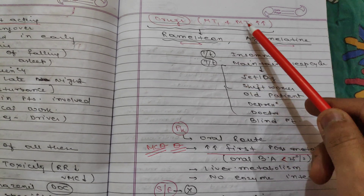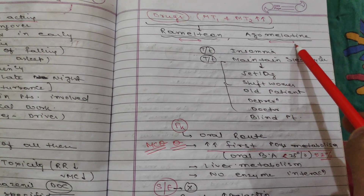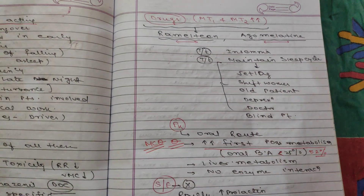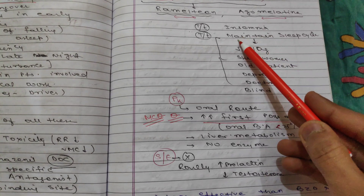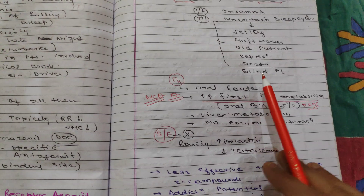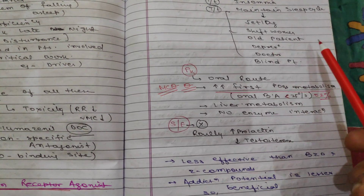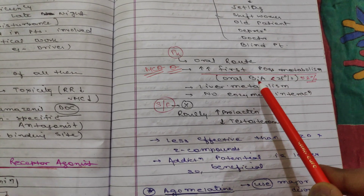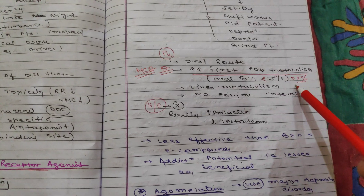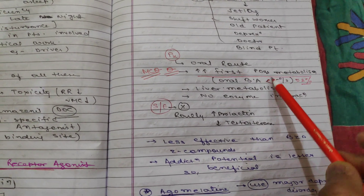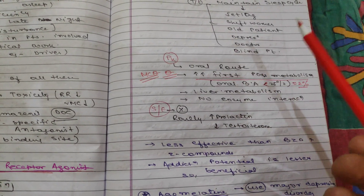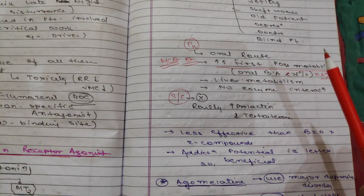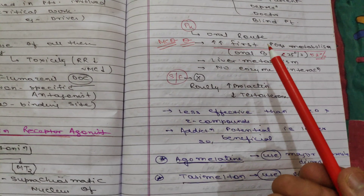Drugs that increase both MT1 and MT2 activity include ramelteon and agomelatine. These drugs can be used for treatment of insomnia, maintenance of the sleep cycle, and sleep disorders in patients such as shift workers, elderly patients, and those with depression. Pharmacokinetically, they are given orally but have very high first-pass metabolism, with oral bioavailability less than 25% — in some drugs as low as 2%. Liver metabolism is involved with no enzyme interaction.